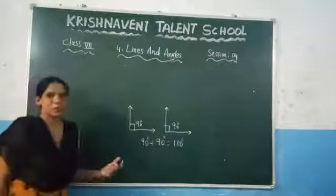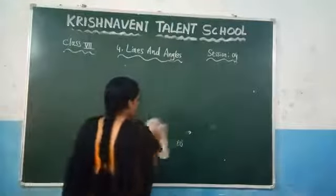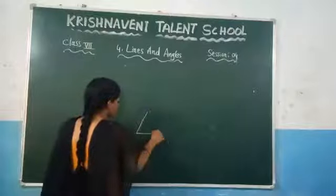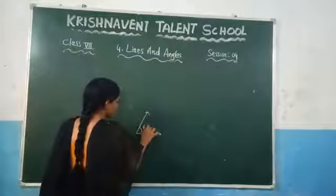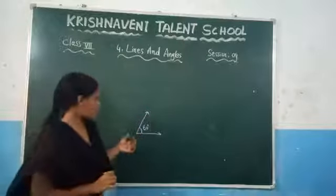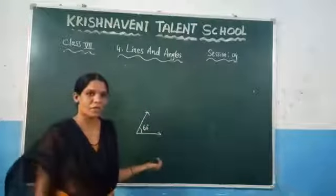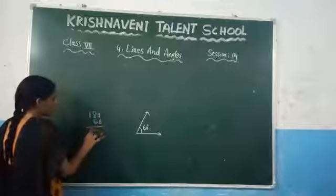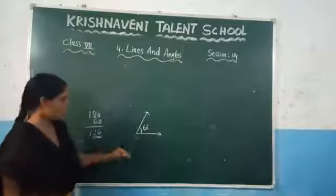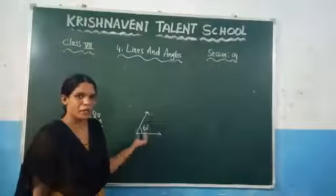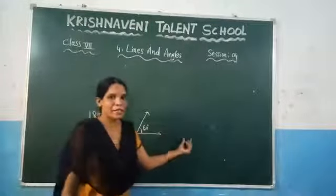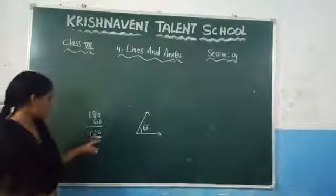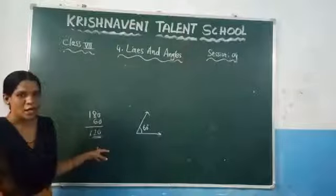Now let us take two acute angles and check whether you can get a supplementary pair. Consider one acute angle which is 60 degrees. What is the supplementary angle of 60? You need to subtract from 180, so you will get the supplementary angle of 60, which is nothing but 120 degrees. So if you are taking one acute angle, the other supplementary angle you are getting is an obtuse angle, because 120 is more than 90.